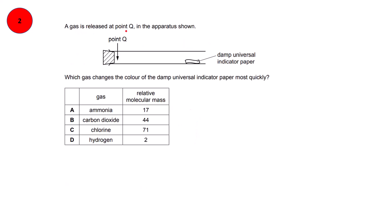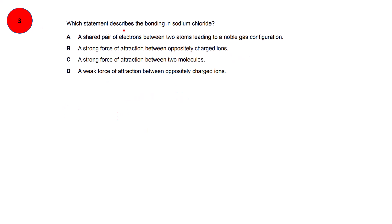Question number 2. A gas is released at point Q — which gas changes the color of damp universal indicator paper most quickly? The four options are ammonia, carbon dioxide, chlorine, and hydrogen. Hydrogen has no effect on damp universal indicator paper, so eliminate it. This question is about diffusion — the gas with the least relative molecular mass will reach the indicator paper most quickly. Out of the remaining three gases, ammonia has the lowest Mr, so option A is correct.